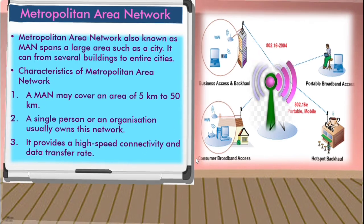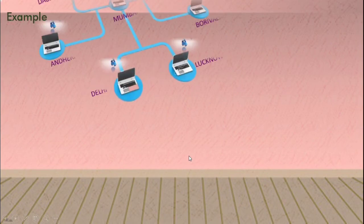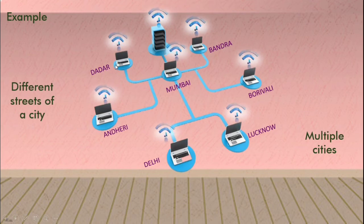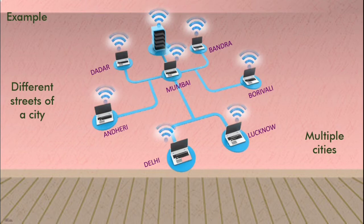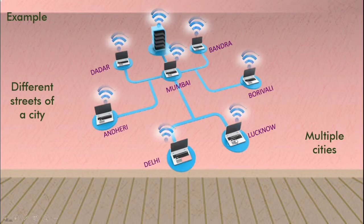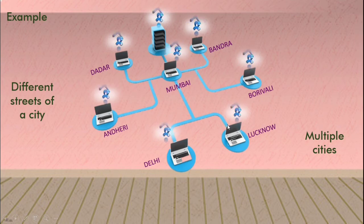Now we will see an example of a metropolitan area network. Any company that has offices located at different streets of a city would use this network. For example, in Mumbai, banks like Bank of India have sub-branches in Dadar, Bandra, Andheri, Goregaon, etc. Meaning in one city, the bank has branches in different areas. Similarly, an organization like Bank of India can have offices in multiple cities as well — like Mumbai, Delhi, and Lucknow — connected together across the network.